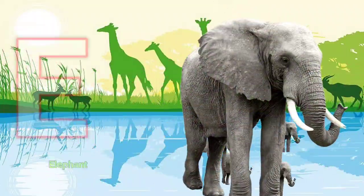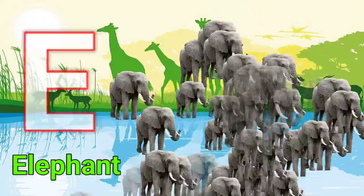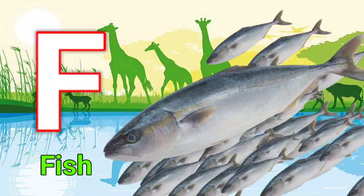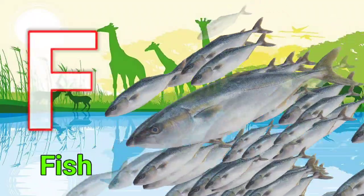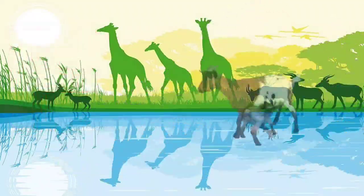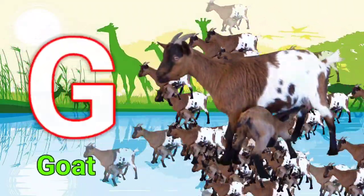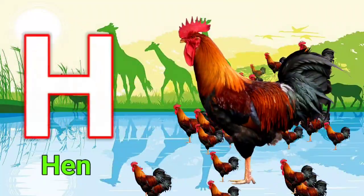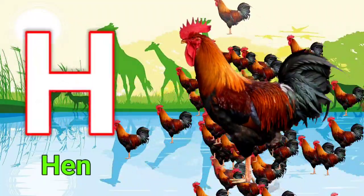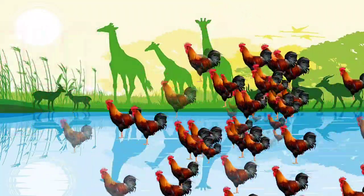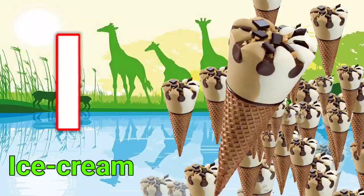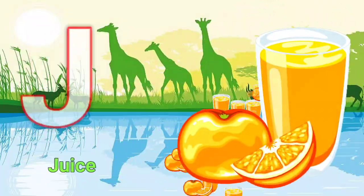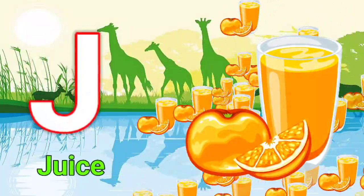E for elephant, F for fish, G for goat, H for hen, I for ice cream, J for juice.